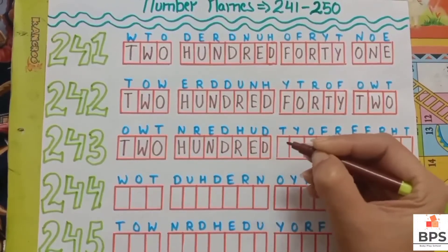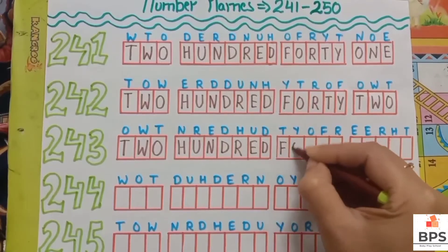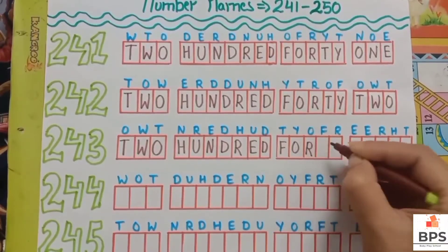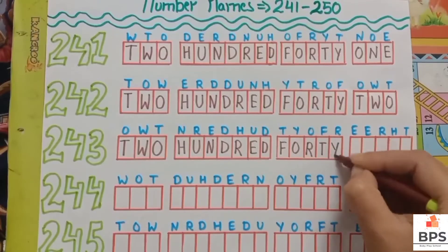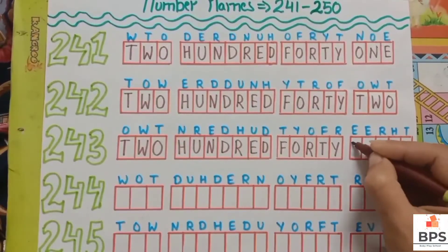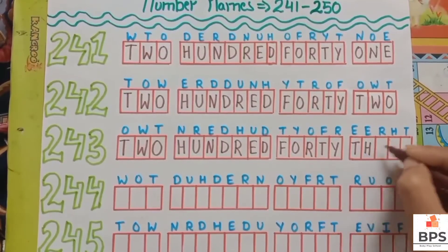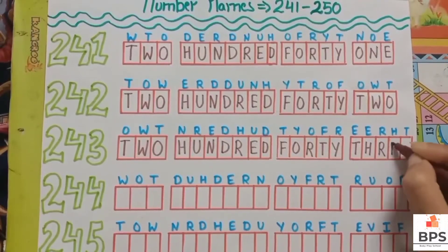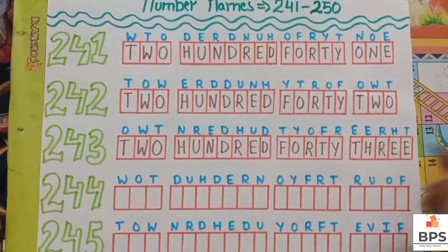Two four three — two hundred forty three. T-W-O, two; H-U-N-D-R-E-D, hundred; F-O-R-T-Y, forty; T-H-R-E-E, three. Two hundred forty three.